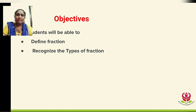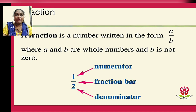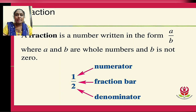What is a fraction? A fraction is a number written in the form of a upon b, where a and b are whole numbers and b is not zero — so the denominator is never zero. The numerator is written on the top, and the numerator and denominator are separated by a fraction bar.